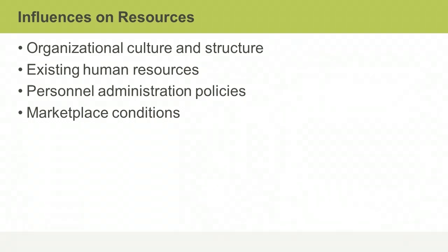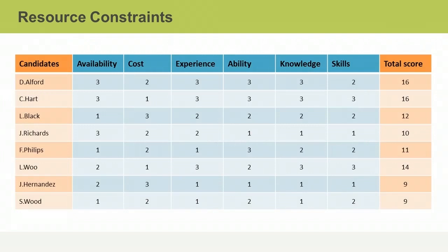Taking the time to acquire project team members with the right skills provides the foundation for achieving project goals. To do so, you'll need the human resource management plan and several organizational process assets and enterprise environmental factors. Although you may have already estimated the needs for your project, that doesn't necessarily mean you're going to have access to everyone and everything you need. Resource constraints may have an impact on other areas of your project, such as the budget or schedule.